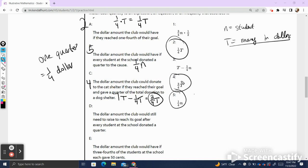D says the dollar amount the club would still need to raise to its goal after every student at the school donated a quarter. So if every student at the school donated one quarter, they would have one fourth n money. However, this question isn't asking how much they would raise if the students donated a quarter, it's asking for the dollar amount the club would still need, which means we're not going to use one fourth n, we're going to use T minus one fourth of n, which will give us the amount left that they need to raise. We have to be really careful about the wording of the questions because a lot of these guys are very similar.